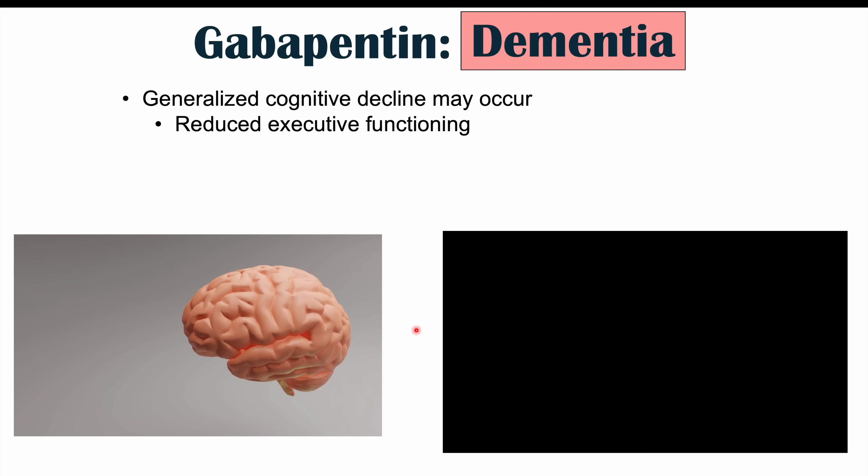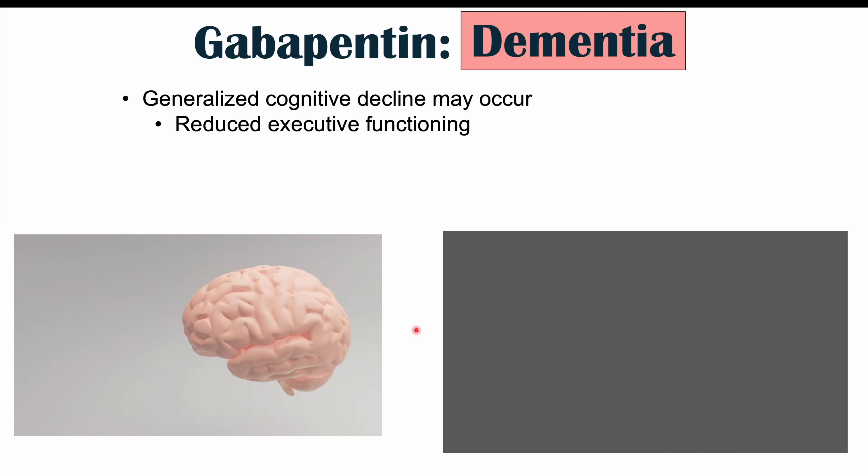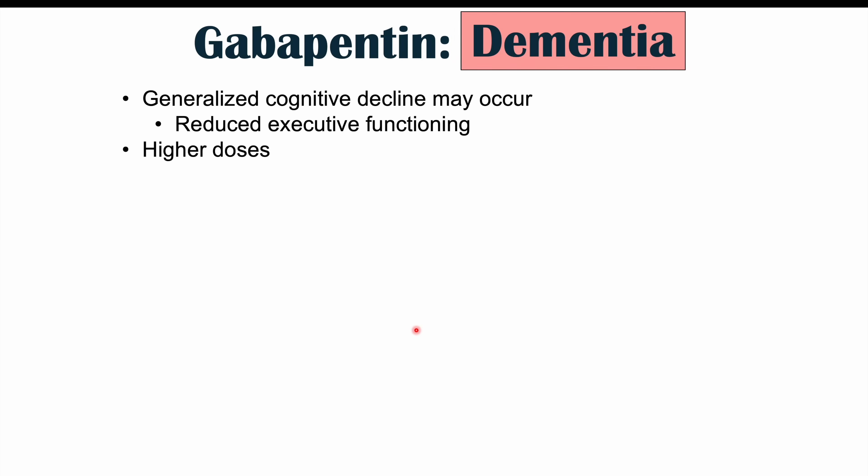Even in patients without a diagnosed cognitive decline, they can have issues with memory — they can't remember as much as they used to, can't think as fast, and have reduced executive functioning. Again, this is more likely with long-term use and higher doses.